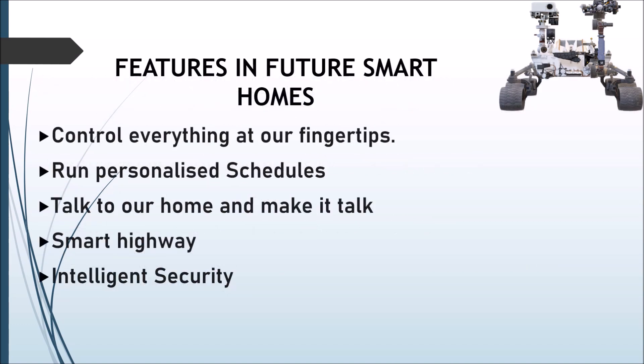Features in future smart homes include the ability to control everything at our fingertips — turn on our lights, play our favorite music, or change our room temperature. These are examples of AI-run personalized schedules: have our coffee ready when we wake up, automatically turn everything off — AC, lights, fans — when we leave for work, have them turned on by evening, and turned off automatically when we go to bed.